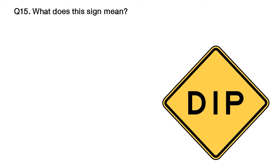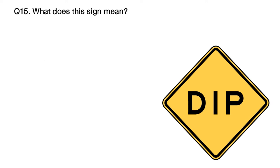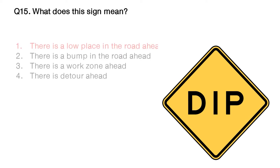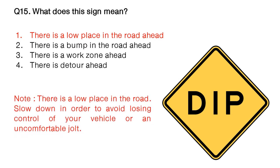Question: what does this sign mean? Option number 1: there is a low place in the road ahead. Option number 2: there is a bump in the road ahead. Option number 3: there is a work zone ahead. Option number 4: there is a detour ahead. The answer is option number 1: there is a low place in the road ahead. Note: slow down in order to avoid losing control of your vehicle or an uncomfortable jolt.